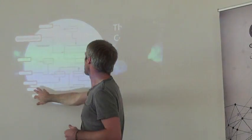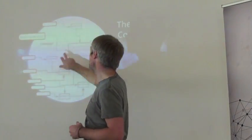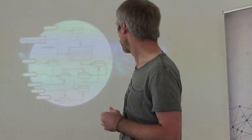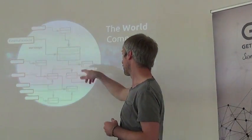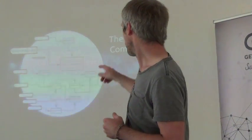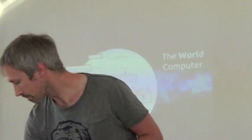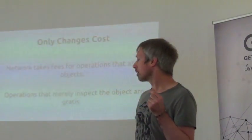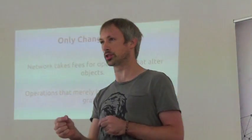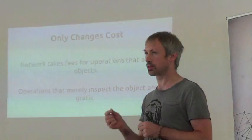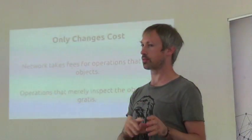The way we interact from the outside into the computer is with external accounts, by passing messages from them. The objects can pass messages to each other; they can even go in loops. The objects have storage — they can remember. When you're using the computer, the only things that cost money are the things that change the computer. You don't have to pay anything to inspect; you only have to pay for changes.